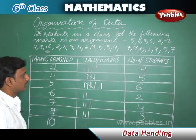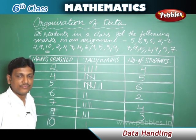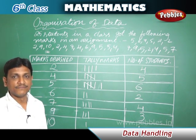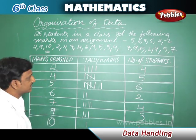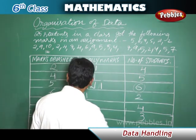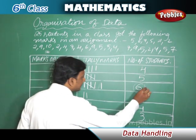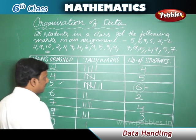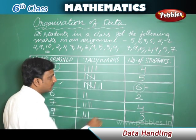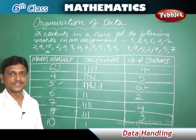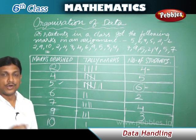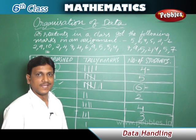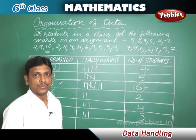In this way we have organized the raw data. Now we can answer questions easily: How many students got eight marks? — None. Which mark was obtained by the maximum number of students? — Five marks, obtained by six students. What is the least mark? — Two marks, obtained by four students. How many students got the highest mark of ten? — Only one student.